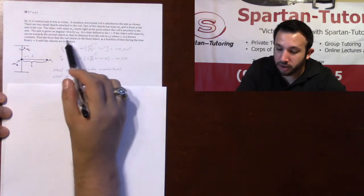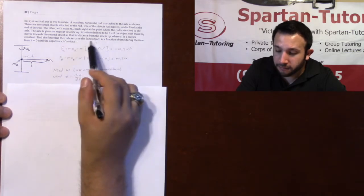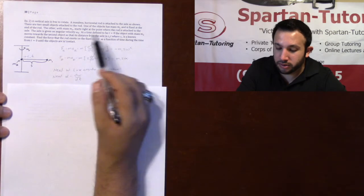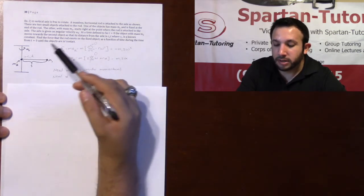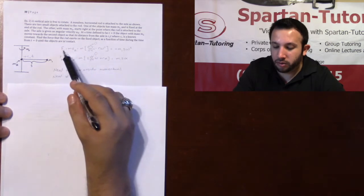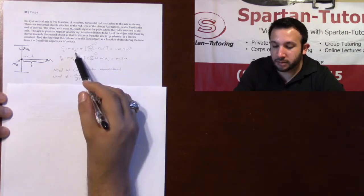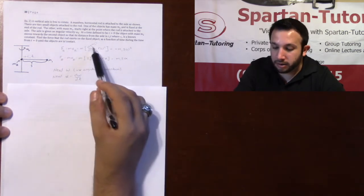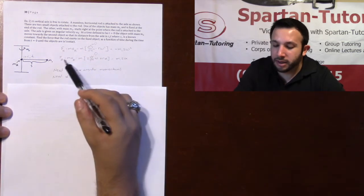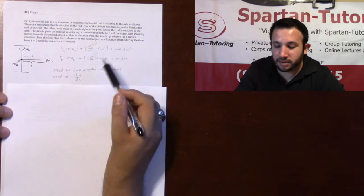Find the force that the rod exerts on the fixed object as a function of time during the time from t equals 0 until the objects are in contact. Now as we know, FR is going to be m times aR.